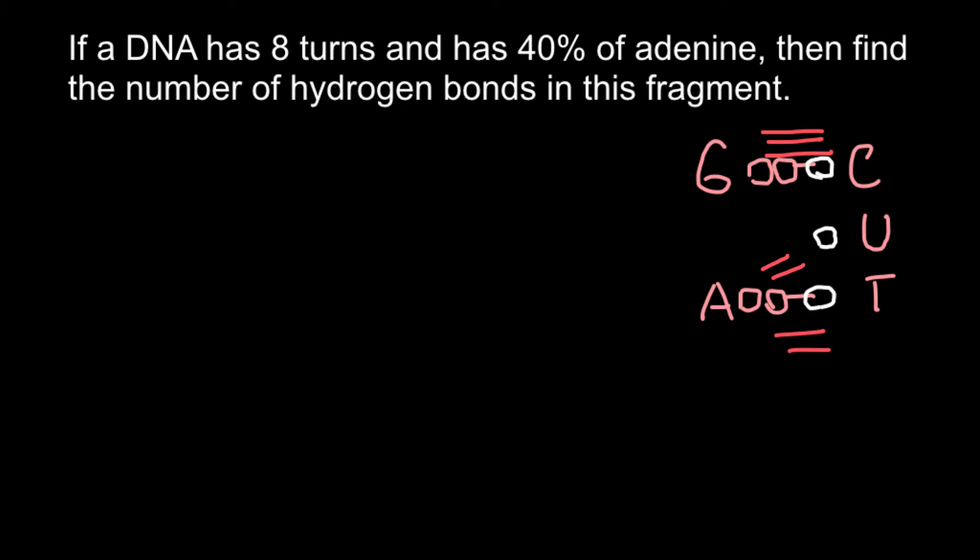Now we can solve our problem. The key information you need is that DNA makes one full 360-degree turn every 10 base pairs. You may find different numbers in different sources because DNA has different conformations — A, B, or Z — and pH and other factors may influence these numbers. We'll use 10 because it gives us discrete whole numbers, since DNA base pairs are counted as 1, 2, 3, 4, and so on.